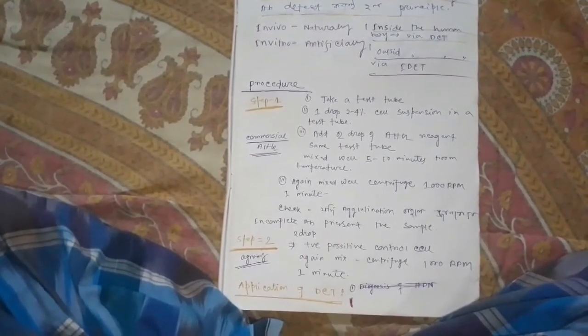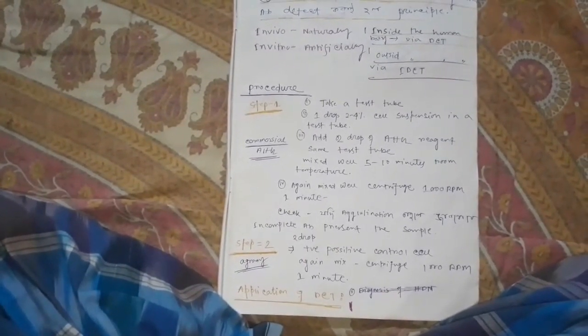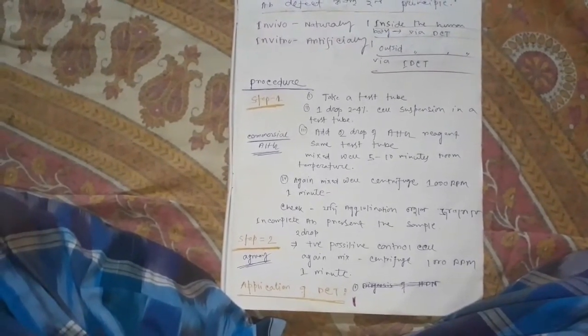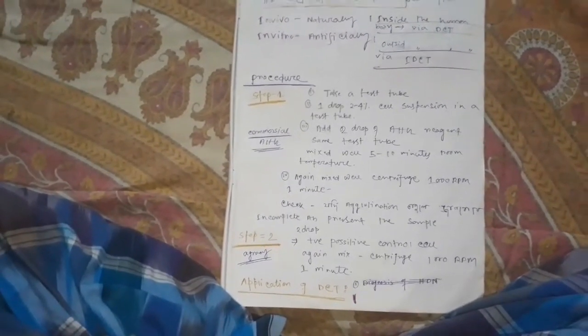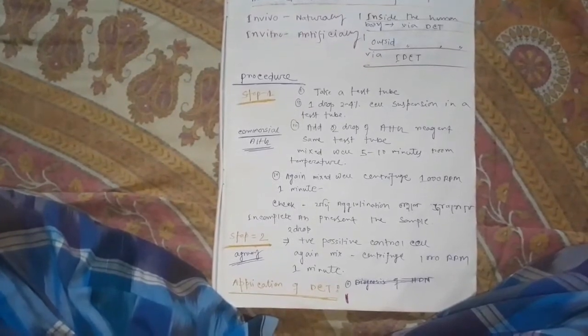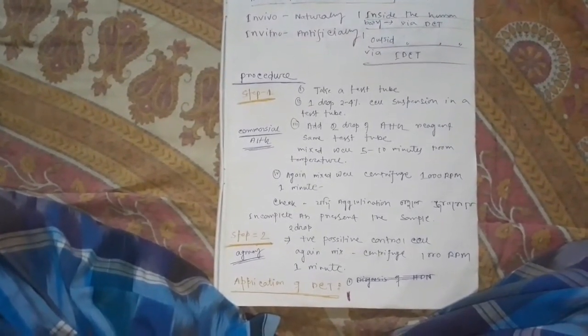If no agglutination, we need to add positive control cells and centrifuge at 1000 rpm for 1 minute to check for agglutination.